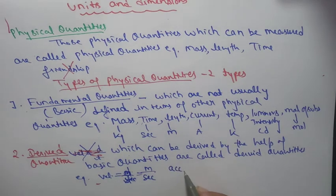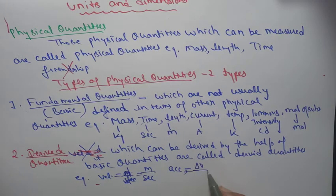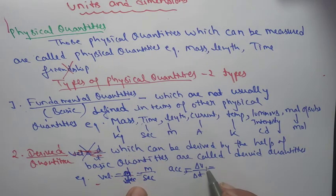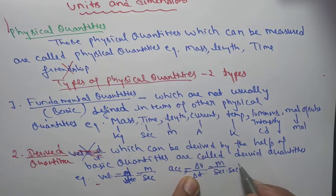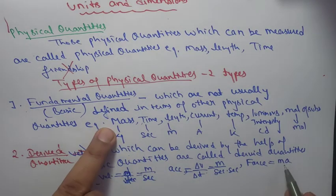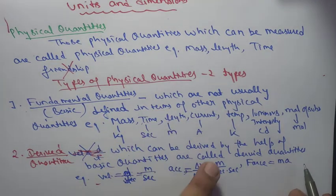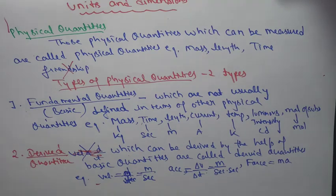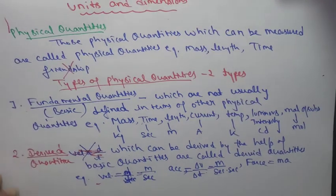For example, acceleration — acceleration is change in velocity upon time. Velocity depends on distance and time. Mass is in kg. Acceleration used the help of fundamental units, so acceleration is a derived quantity. Fundamental or basic quantities are those which do not depend on any other quantity.